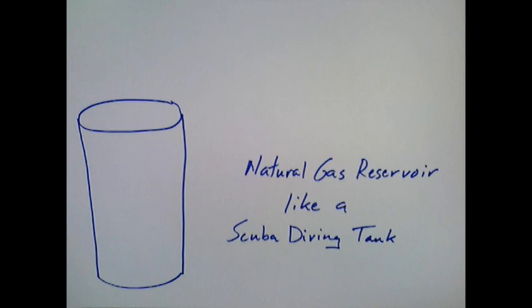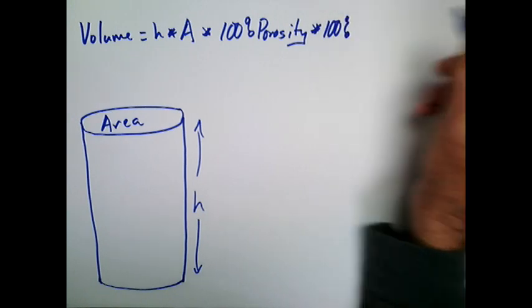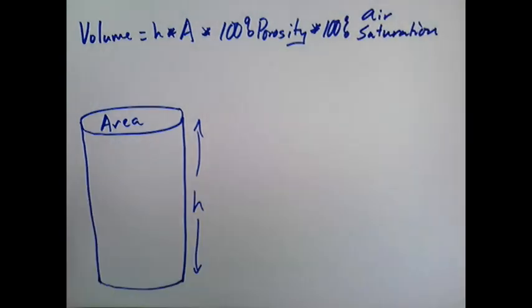Before we drill a well, or go scuba diving, we really want to make sure there is plenty of air. So we get out our ruler, measure the height and area, and since there is nothing else in our tank but air, multiply that by 100% porosity and 100% gas saturation, and determine that our tank has, say, one cubic foot of air. That doesn't seem like enough, does it?